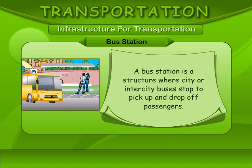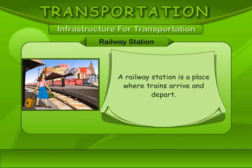Bus Station. A bus station is a structure where city or intercity buses stop to pick up and drop off passengers. Railway Station. A railway station is a place where trains arrive and depart.